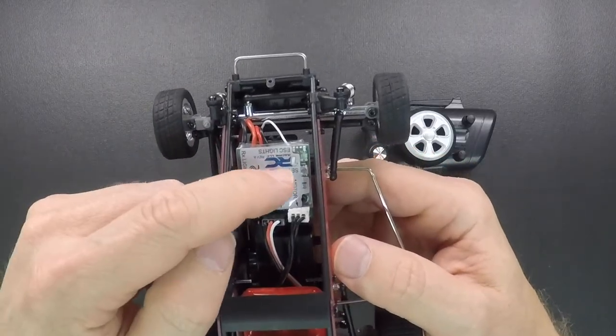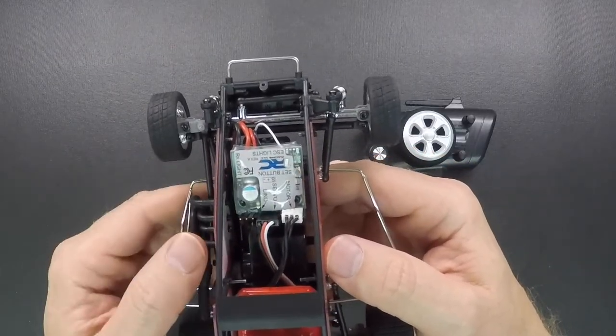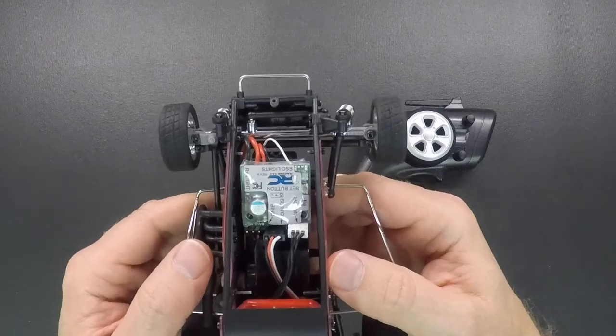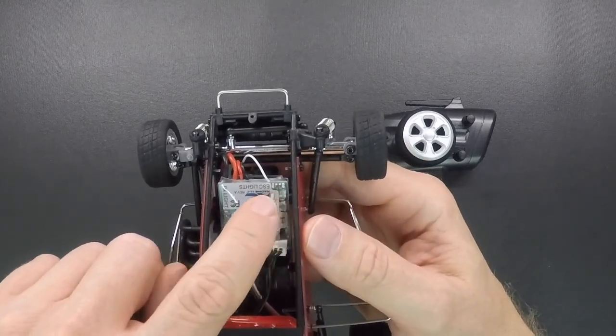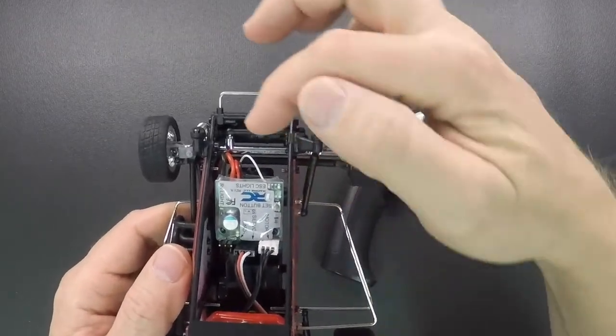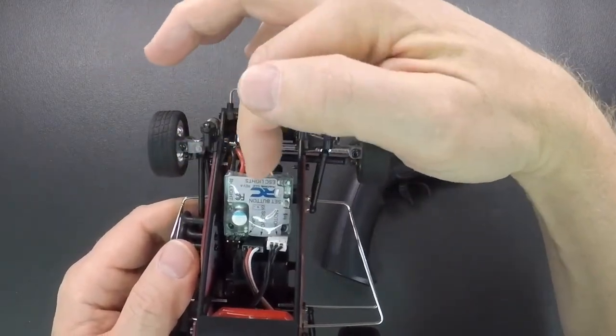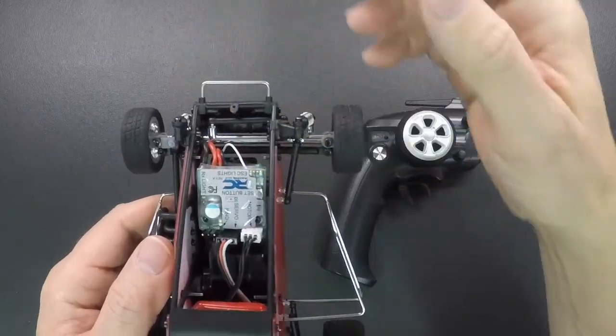What you're going to want to do is you're going to want to push that button down and hold it down as you turn the car on. And then you're also going to look for these lights in this corner here. There's a red light on this side here and then there's a green light on this side of the speed control but they're right in this area.